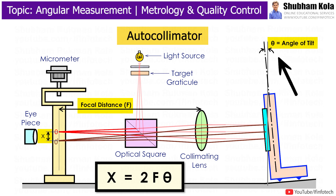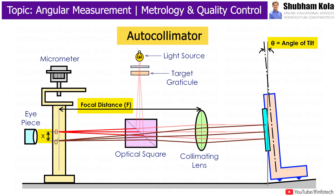In this way, we can measure the angle of tilt with the help of the Attocholimeter. Most Attocholimeters are calibrated so that there is no need to convert the measured distance into an angle of inclination. This conversion is done within the Attocholimeter itself, and the angle of inclination can be read directly.